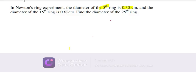In Newton's rings experiment, the diameter of the 5th ring is 0.30 centimeters, and the diameter of the 15th ring is 0.62 centimeters. Find the diameter of the 25th ring.